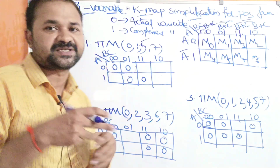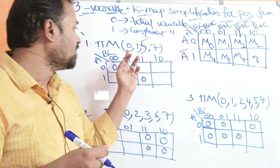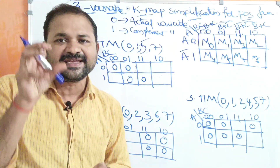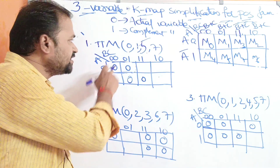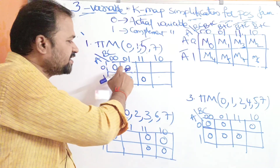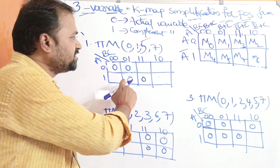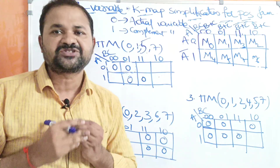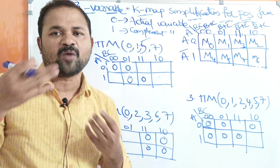Now let us solve the first problem. π M(0, 1, 5, 7) means product operation with capital M denoting max terms at positions 0, 1, 5, and 7. We write 0 in the corresponding cells: write 0 in the 0th max term cell, write 0 in cell 1, write 0 in cell 5, and write 0 in cell 7.